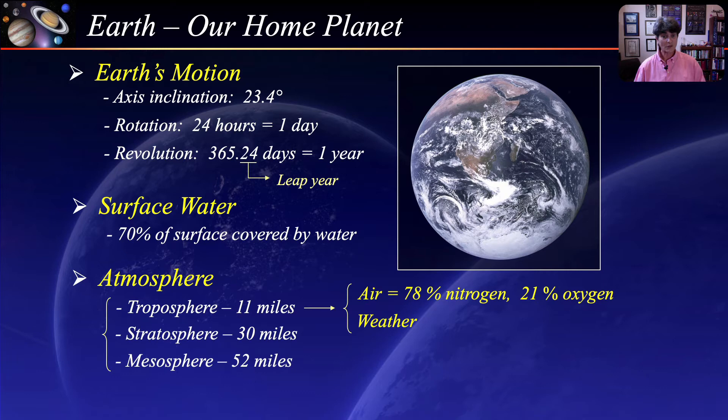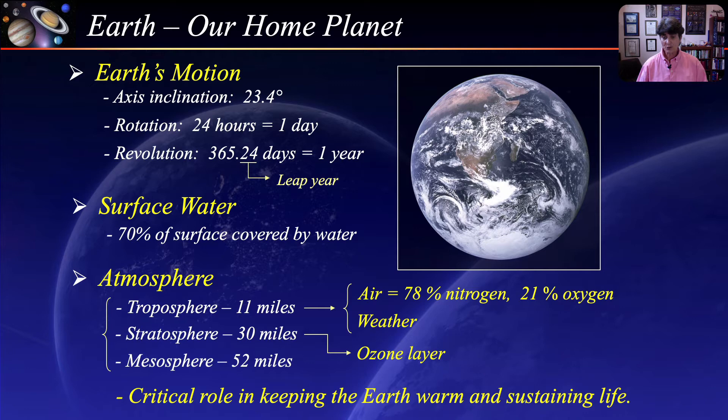The ozone layer is found in the stratosphere and helps shield the planet from harmful ultraviolet radiation from the Sun. The atmosphere plays a critical role in keeping the Earth warm and reducing temperature extremes between day and night. Gases in the atmosphere prevent some of the surface heat from radiating back into space — this is called the greenhouse effect. The greenhouse effect is a good thing, and without it, life on Earth as we know it would not be possible.